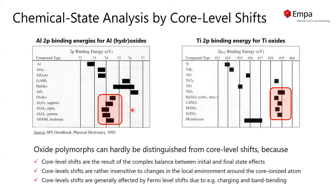We can see that the core level shift can clearly distinguish between different compounds. However, if we have similar polymorphs with only slight compositional or microstructural differences, the core level shift can no longer distinguish well between the different polymorphs.